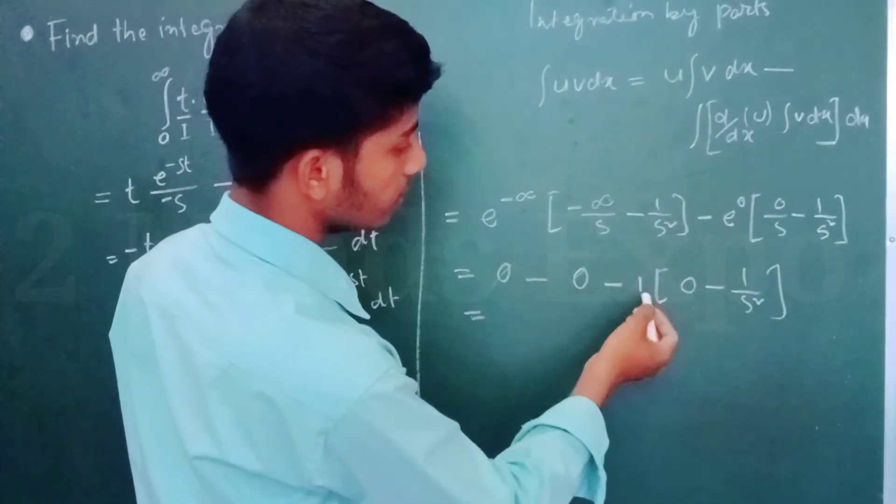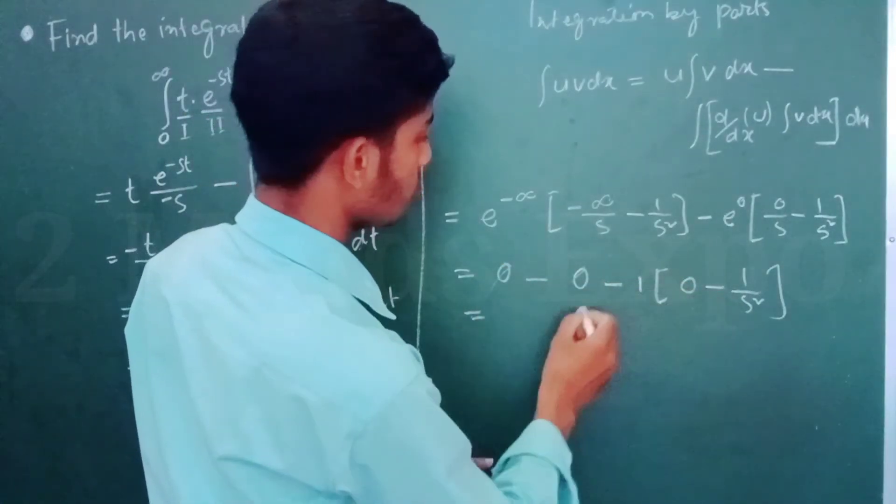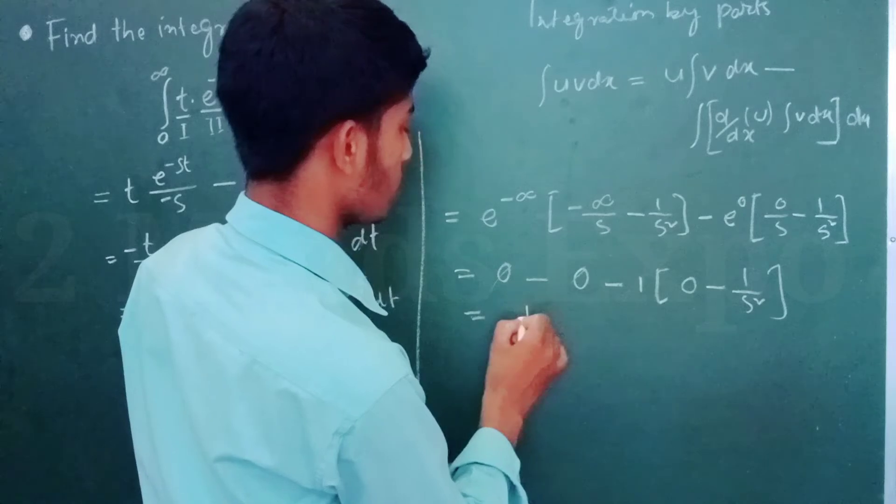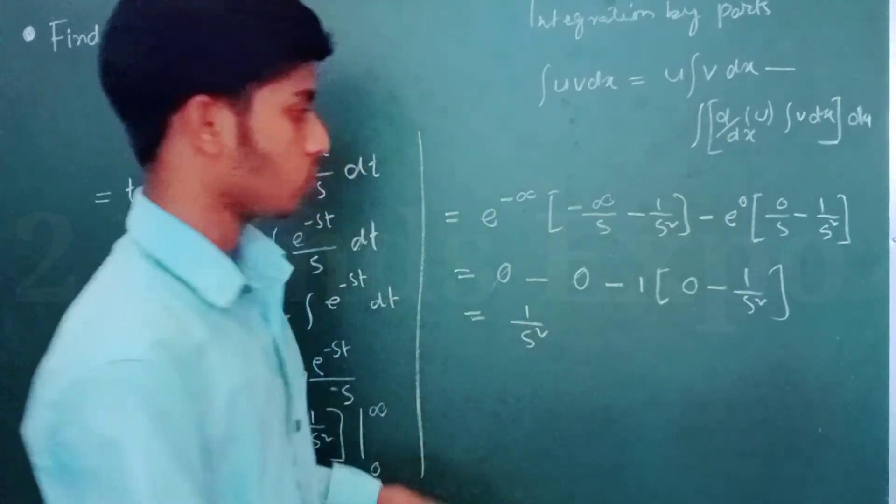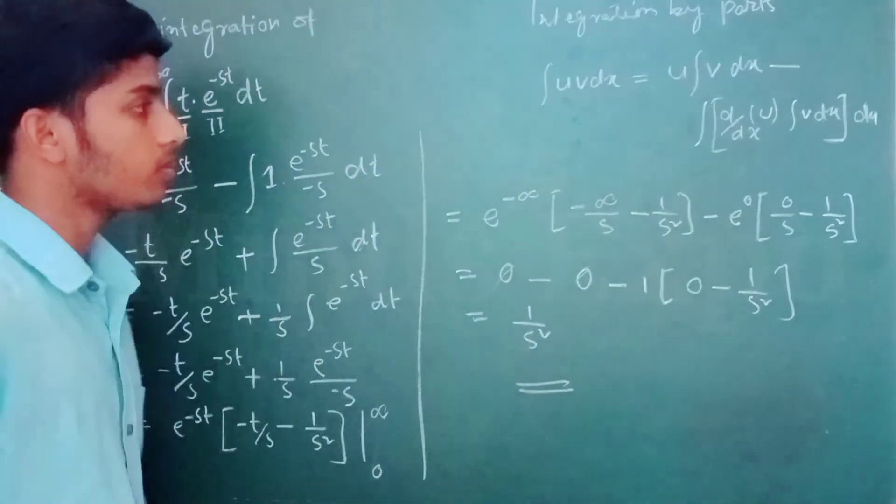0, 0, and minus 0. Minus minus plus 1 by S square. This is the main answer.